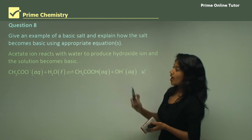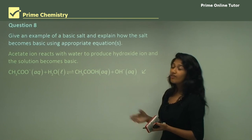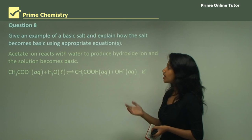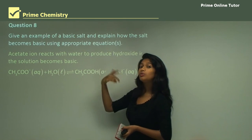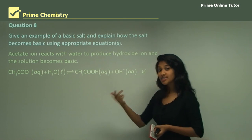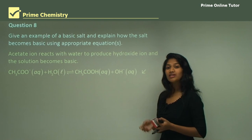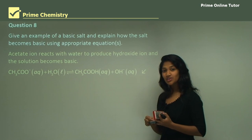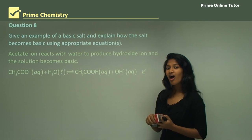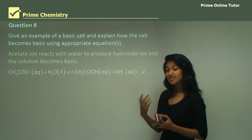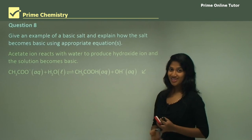The acetate ions react with water to produce hydroxide ions in the solution, making it basic. The reaction is: CH₃COO⁻ + H₂O → OH⁻ + CH₃COOH. In this section we covered acidic salts and basic salts and learned how to determine whether a salt is acidic or basic.